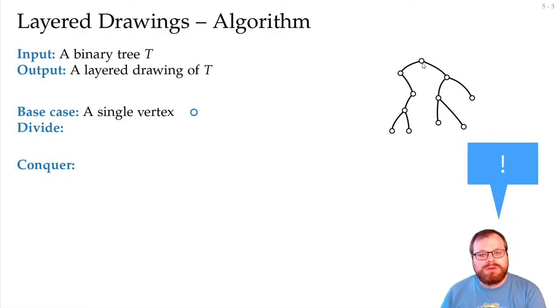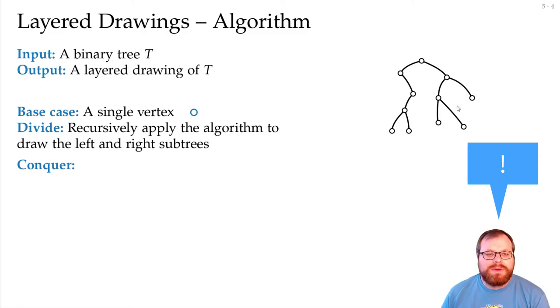How would you divide a tree in the divide step? Well, if you look at the tree here, we have a binary tree, so we clearly have a left child and a right child, or maybe only one of them. And we can look at these sub-trees that we get from the left and right child. And we recursively apply the algorithm to these two sub-trees.